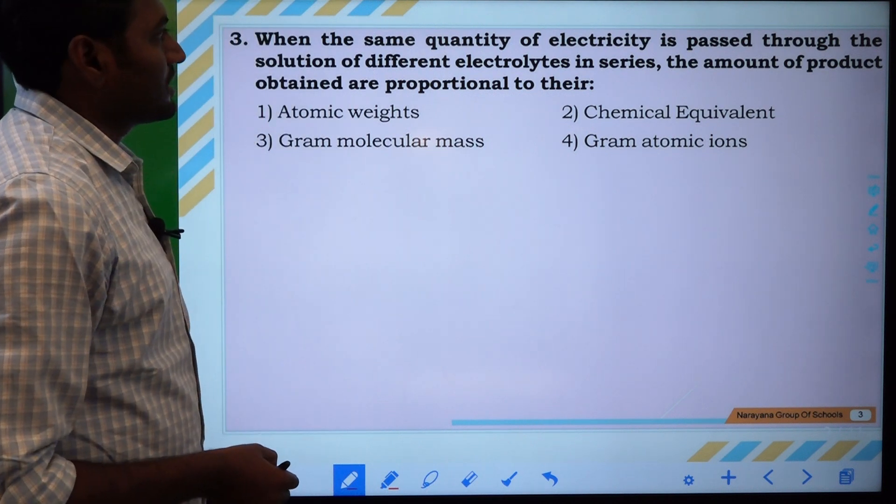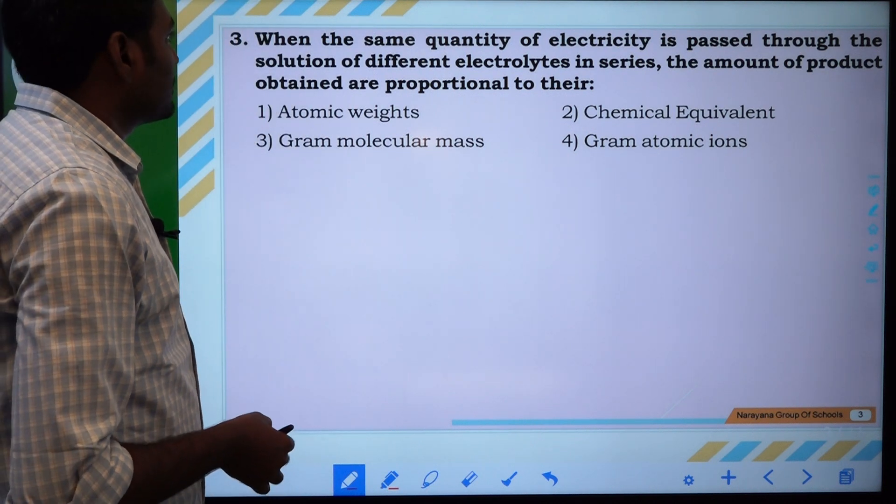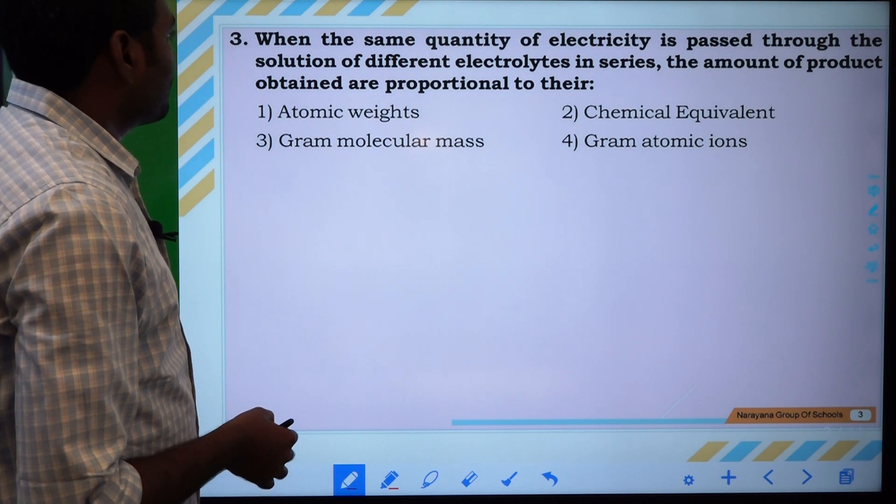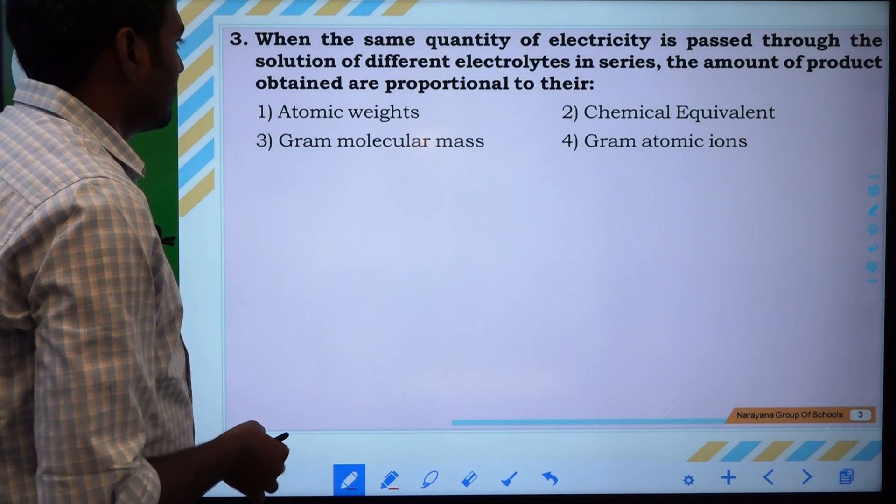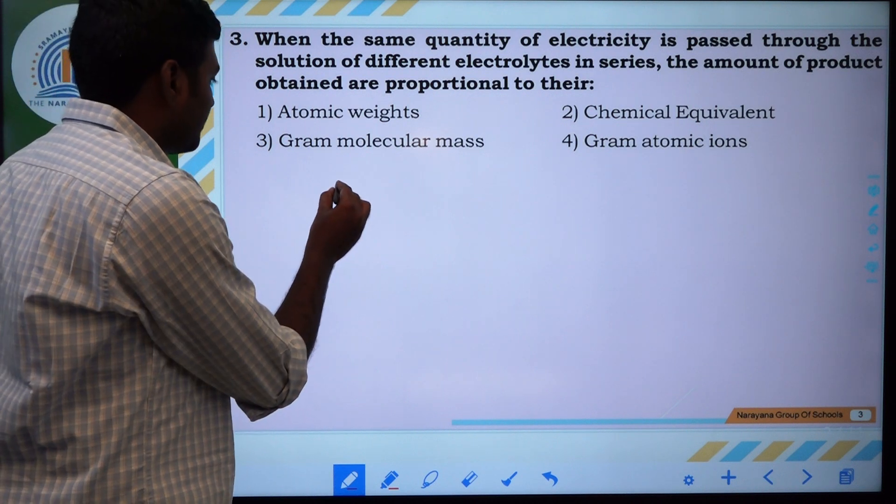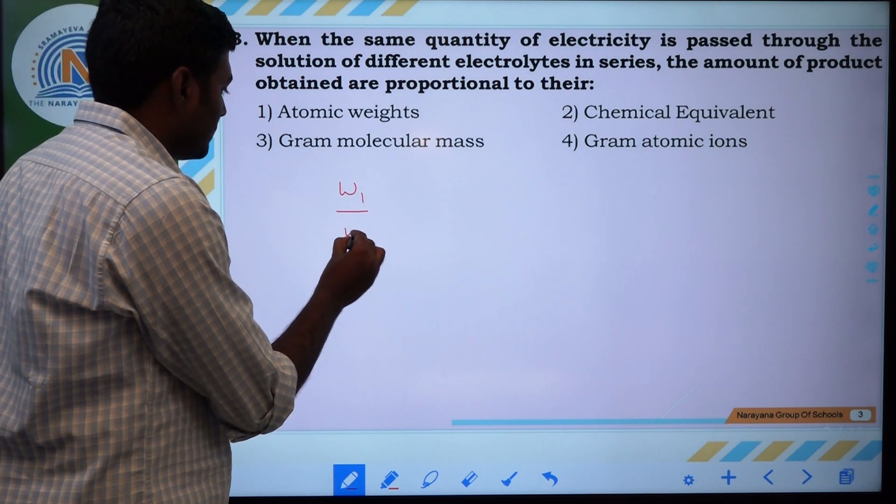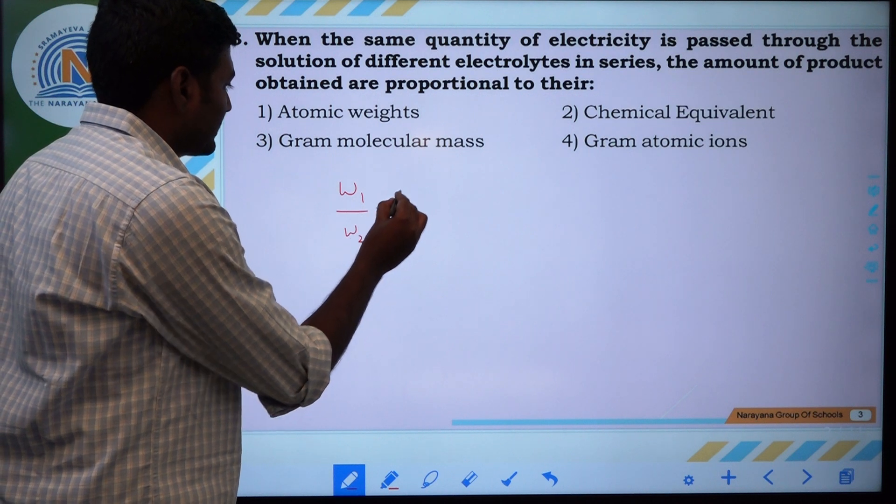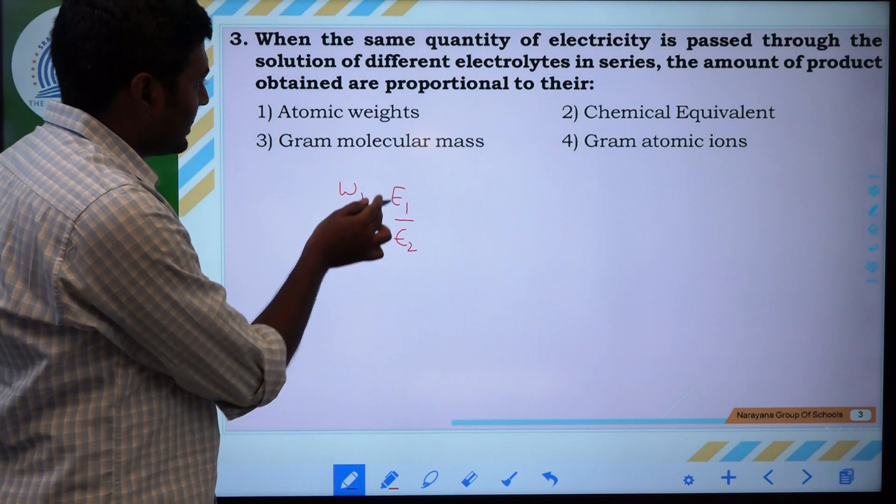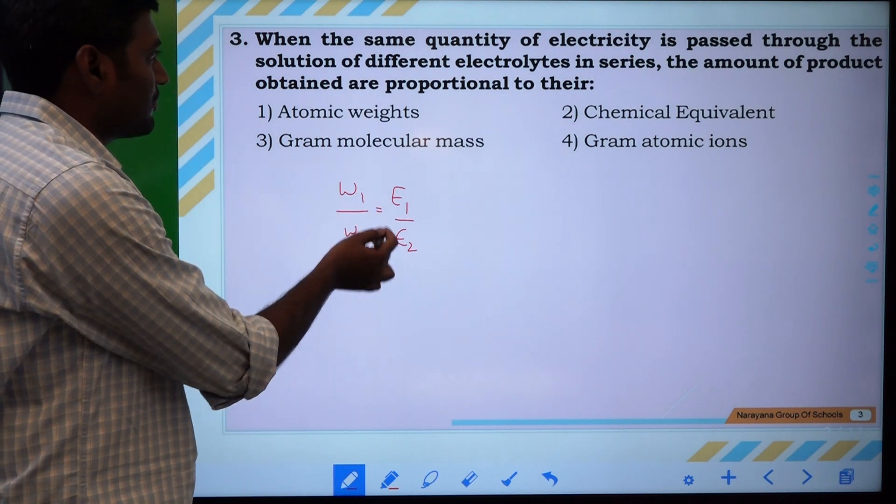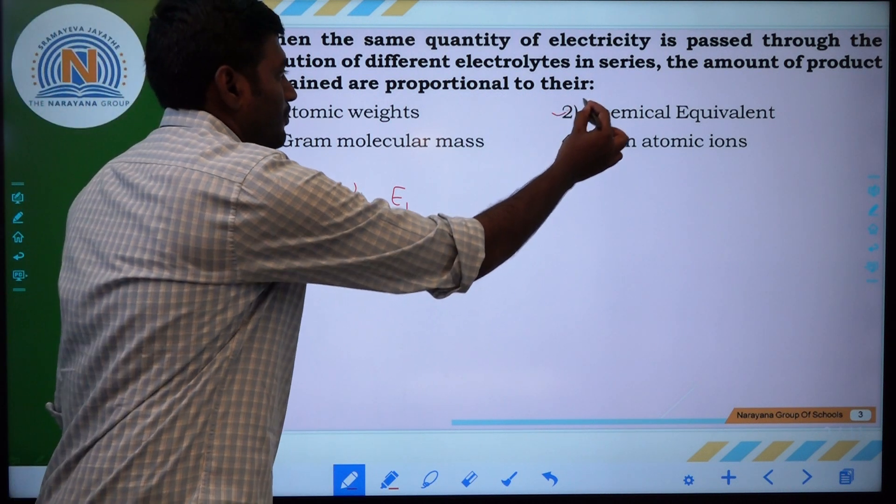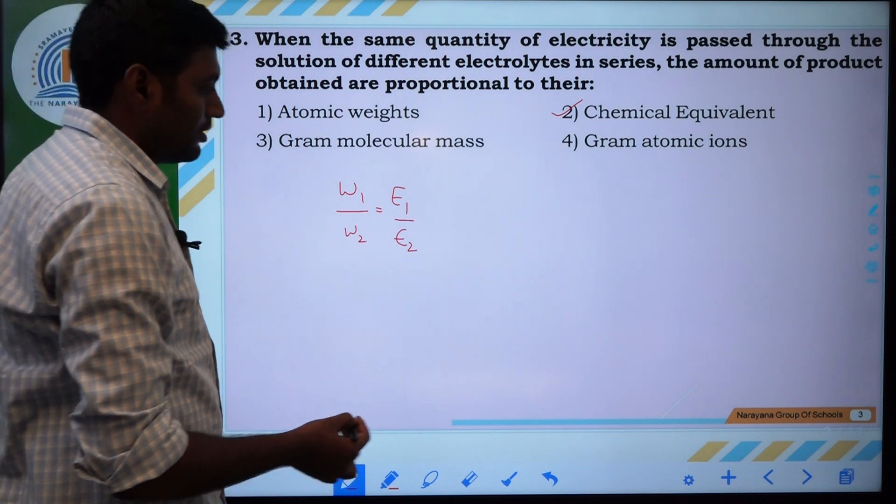When the same quantity of electricity is passed through the solutions of different electrolytes in series, the amount of products obtained are proportional to them. This is according to Faraday's second law. The weight of the substance, if two solutions are connected in series, the weight of the substance deposited is equal to its equivalent weights. Answer is chemical equivalent according to Faraday's second law.